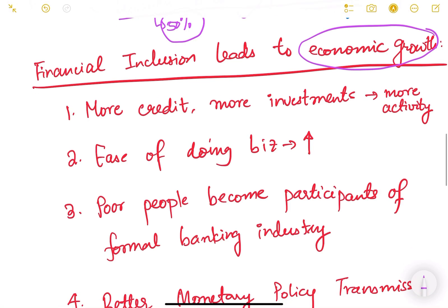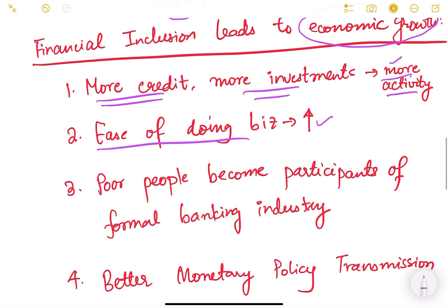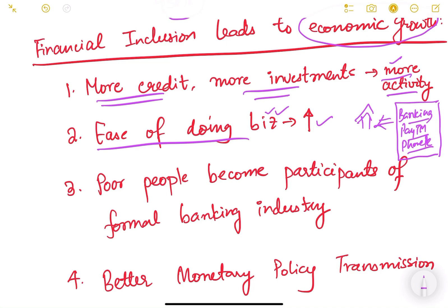Financial inclusion leads to economic growth — there will be more credit, more investments, and more economic activity. Ease of doing business will also increase because it will be easy for the banking system to lend, and overall payments and transactions become easier. For example, a shopkeeper who has access to the formal banking system — these days you have heard about Paytm and PhonePe — because of this his business will grow. He will not be worried about cash or currency transactions because through simple ways he can do his transactions. Financial inclusion makes doing business very easy.